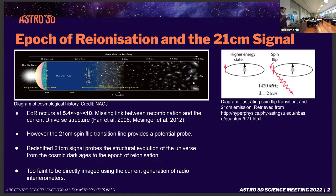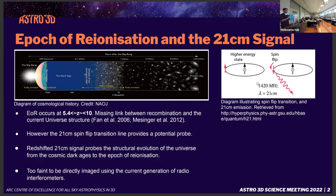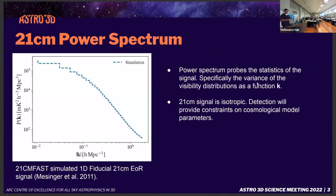The way we probe this is by measuring the hyperfine transition of the 21 centimeter neutral hydrogen — specifically the redshifted signal of that. However, the current generation of radio interferometers are not quite sensitive enough to directly image the emission from this epoch, so instead we're focused on measuring the statistics.